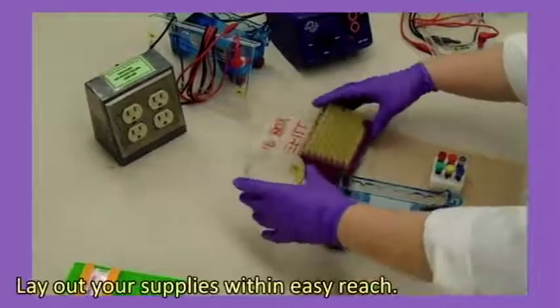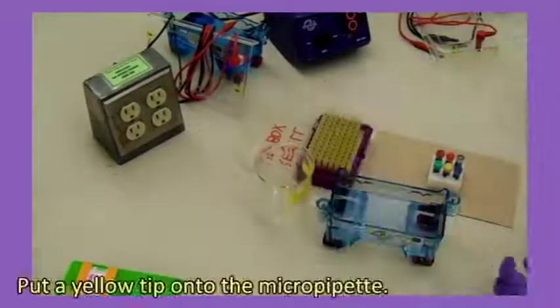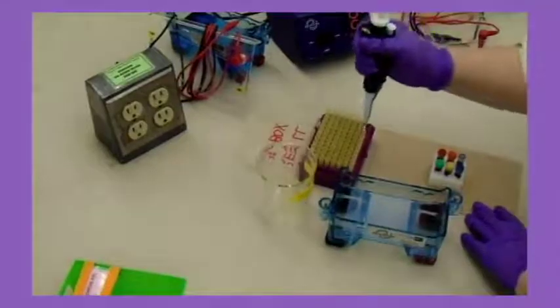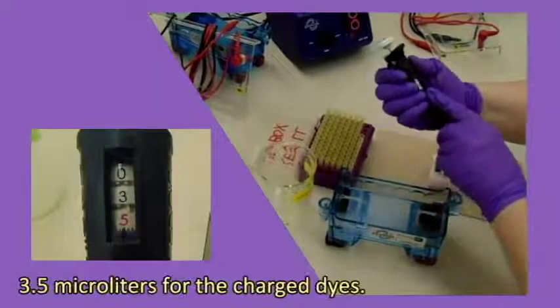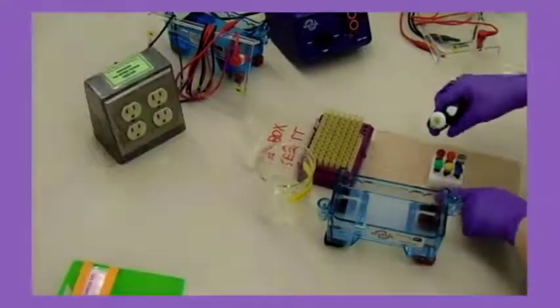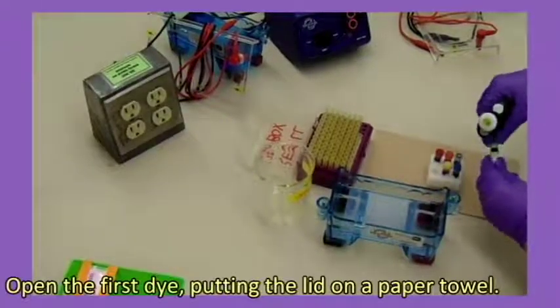Lay out your supplies within easy reach. Put a yellow tip onto the micropipette. Check that your volume is set right, 3.5 microliters for the charged dyes. Open the first dye, putting the lid on a paper towel.